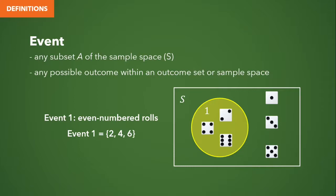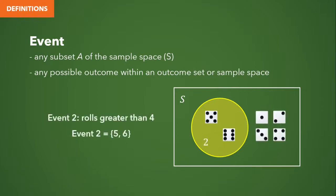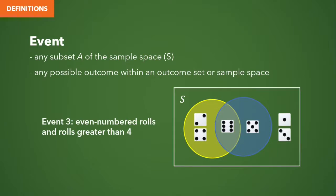Another event can be rolls greater than 4. Inside the circle are 5 and 6, and outside the circle but still inside the rectangle are 1 through 4. We can also have an event that constitutes two different events. So event 3 can be even numbered rolls or rolls greater than 4, and in a Venn diagram, we have this.